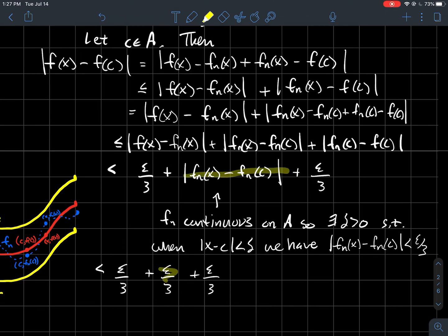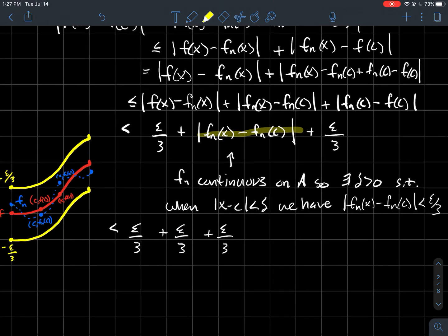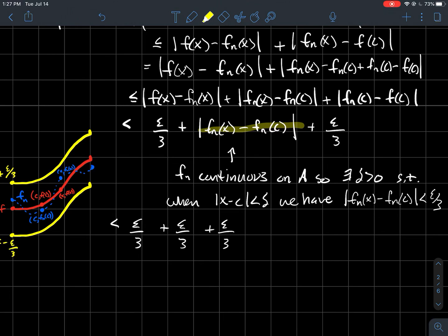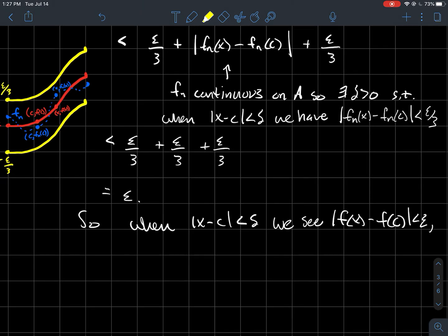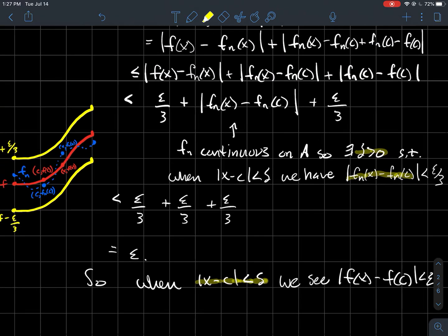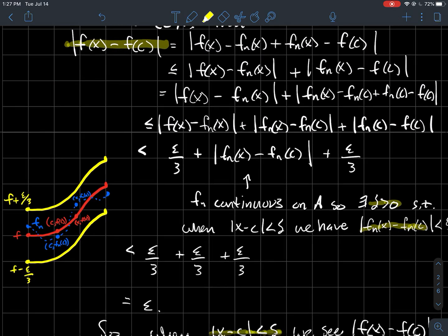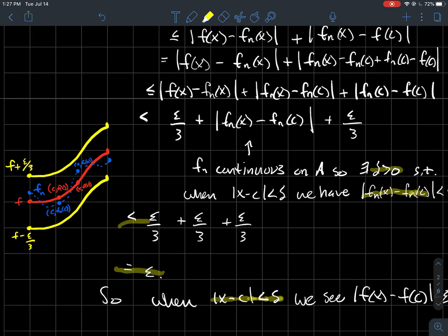And now you see, well, I've got these three terms here, and when you add them all up, you get epsilon. So what just happened? We just showed that as long as I make sure that x is within this delta, and remember this delta just came from the hypothesis that fn is continuous, then what do we have?